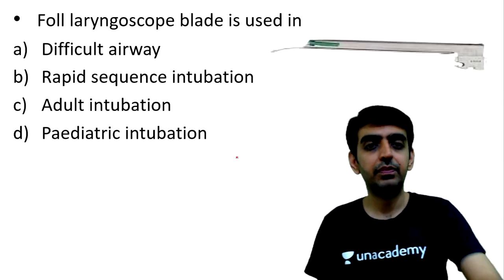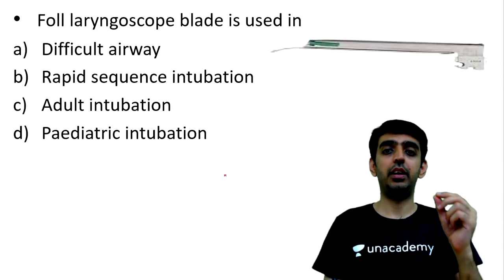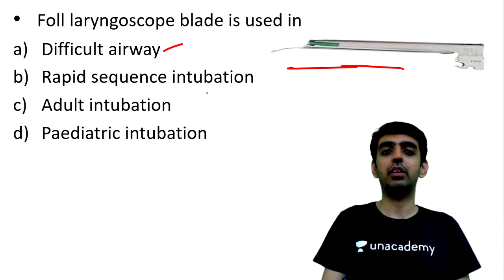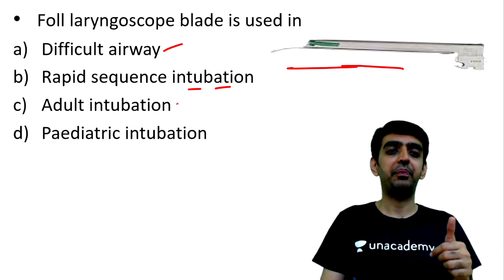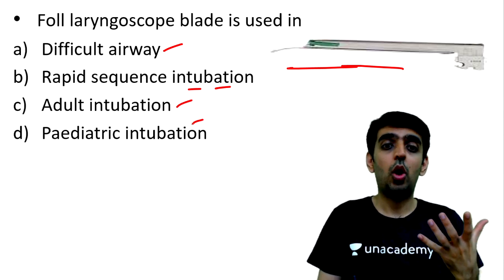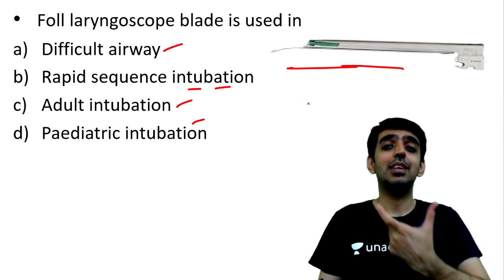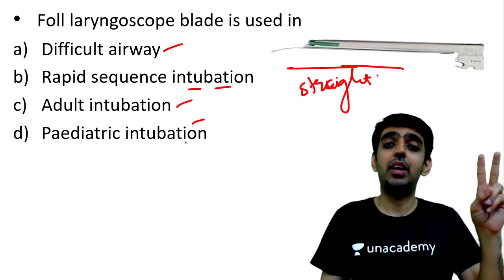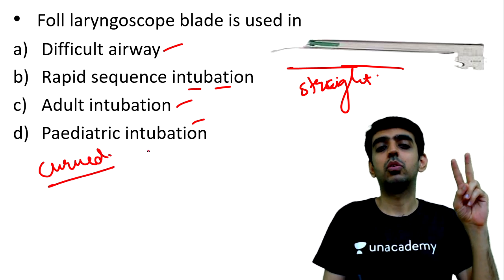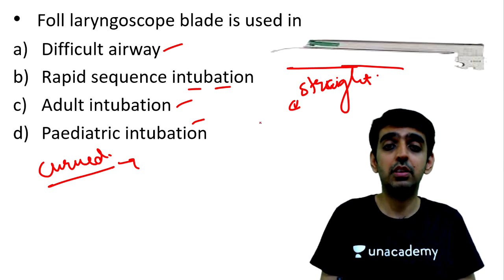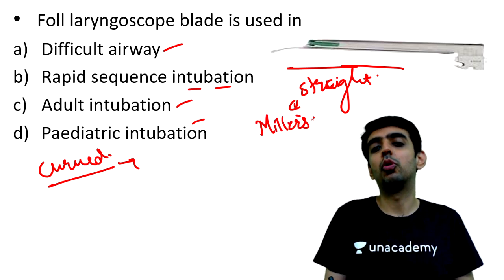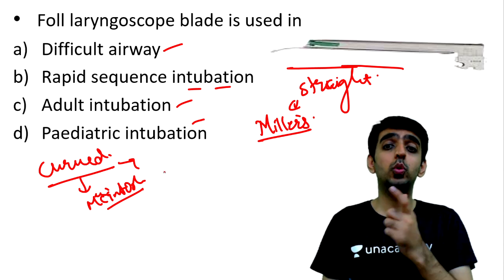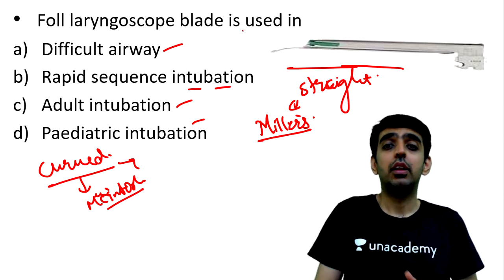Question 5: identify the laryngoscopic blade shown and determine its use — difficult airway, RSI, adult intubation, or pediatric/infant intubation. The image shows a straight blade, known as the Miller's laryngoscopic blade. The curved blade is known as the Macintosh blade.